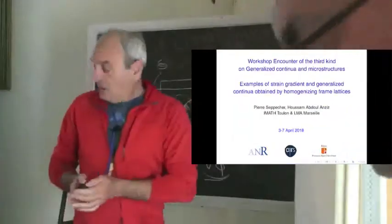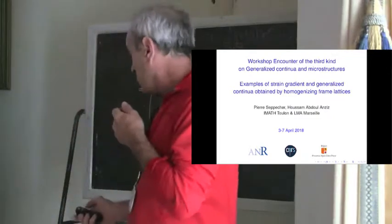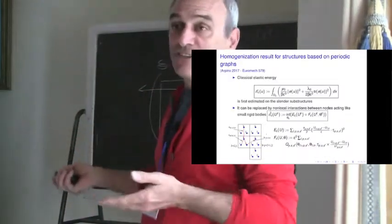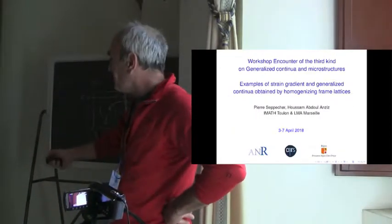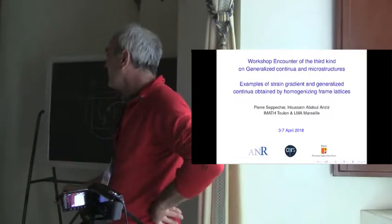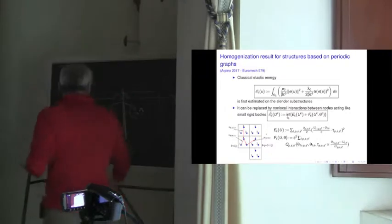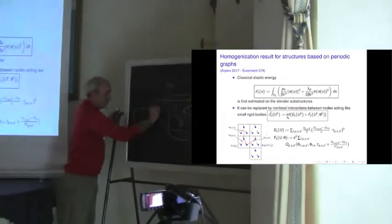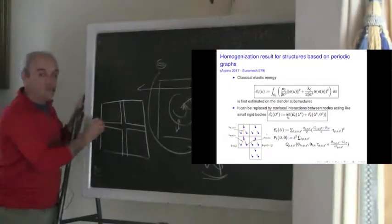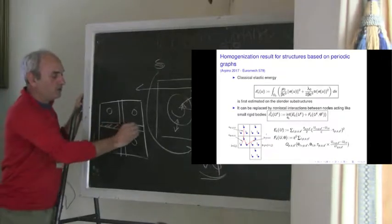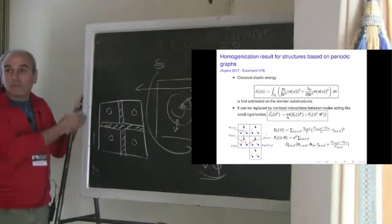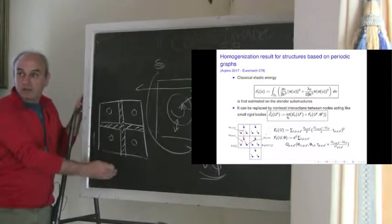So I will show you an example of that, and I will first recall the homogenization results that I have presented last year exactly at this place. So I am looking at geometries of this type because I am only able to do that — very thin, slender pieces of materials with void. So here you have zero as stiffness coefficient and here a very high coefficient. So you can consider that as a lattice made of slender bars which are welded here.